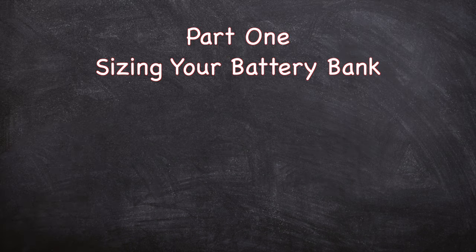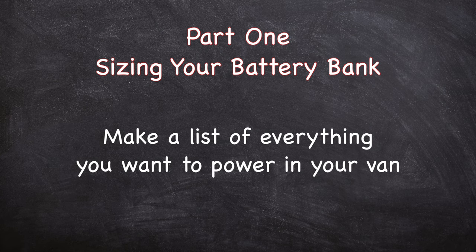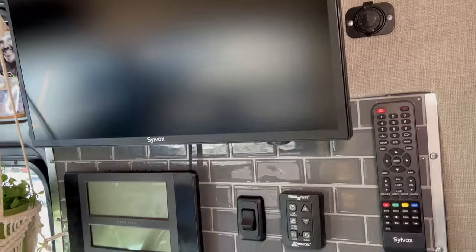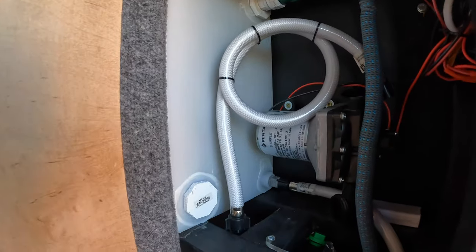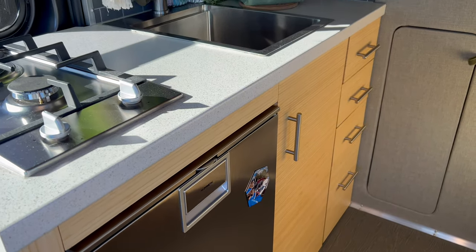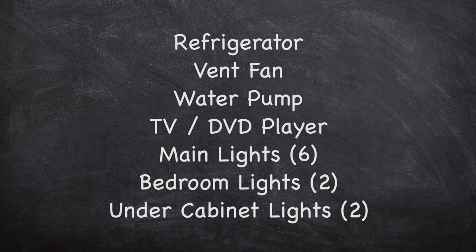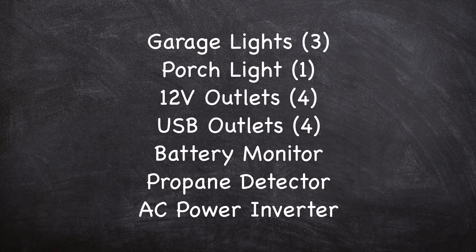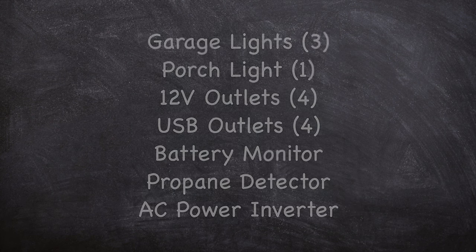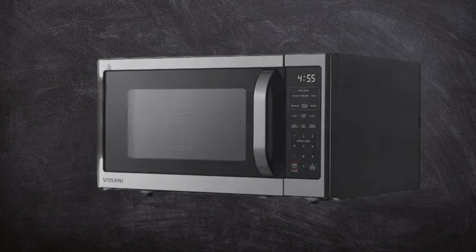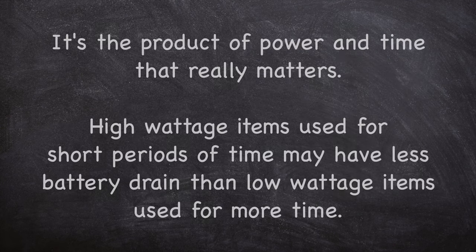The first step in designing a power system is to list all of the appliances, devices, and electronics you would like to use in your van. Think lights, TVs, computers, vent fans, water pumps, the refrigerator, cooktop, water heater, and so on. As an example, here is a list of every powered device in my van. Your list may be shorter, or it may include items like a water heater or microwave that I do not need.